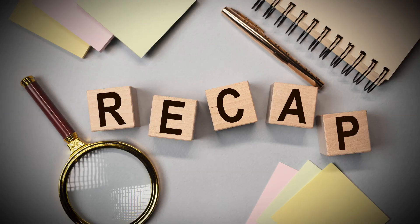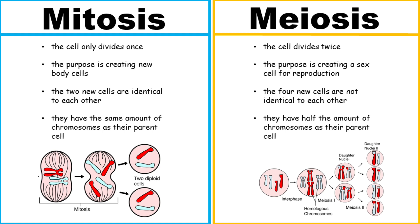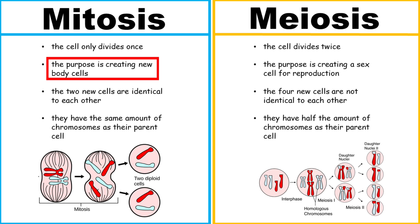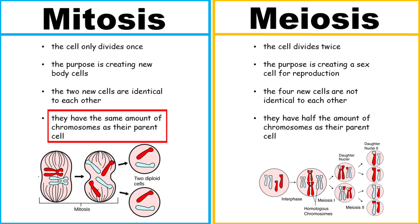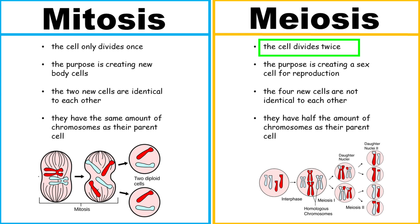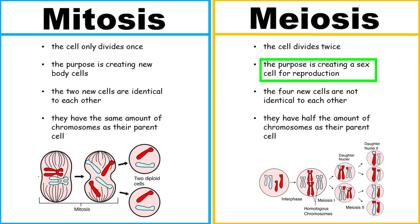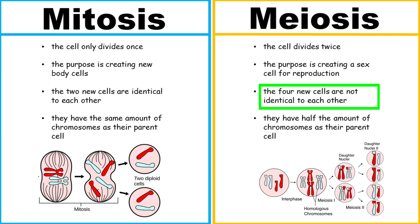The purpose of this is so that it can combine with another sex cell and create a new organism. So to recap: in mitosis, the cell only divides once for the purpose of creating new body cells. The two new cells are identical to each other and have the same amount of chromosomes as their parent cell. In meiosis, however, the cell divides twice for the purpose of creating a sex cell for reproduction.